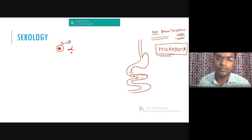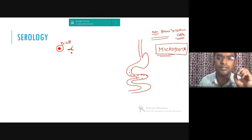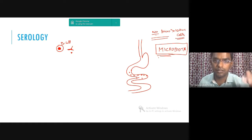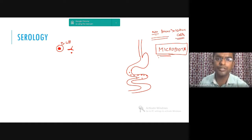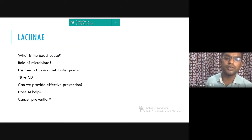Regarding microbiota: is there any way we can change the microbiota and change the individual's disease response or phenotype? Can we change the microbiota and change diabetes? Incretins and anti-incretins are known to change the pathophysiology of diabetes — you can almost control or reverse diabetes, or bring down HbA1c by more than 1.5. That is one place where you can bank your research if you are really interested.